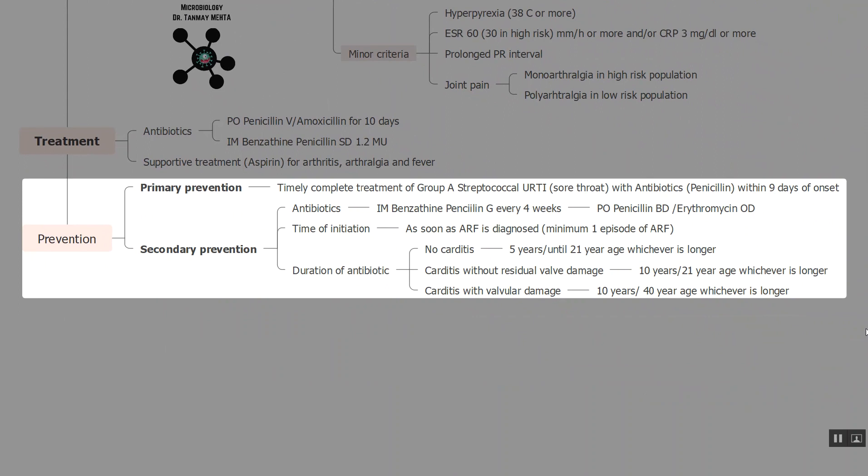Primary prevention involves giving complete and timely treatment of sore throat caused by Group A Streptococci with penicillin or other antibiotics such as macrolides within nine days of onset. Secondary prevention — for patients who have already had at least one episode of ARF — involves starting prophylactic antibiotics to prevent future episodes: intramuscular benzathine penicillin G every four weeks, or daily oral penicillin twice a day, or erythromycin once a day.